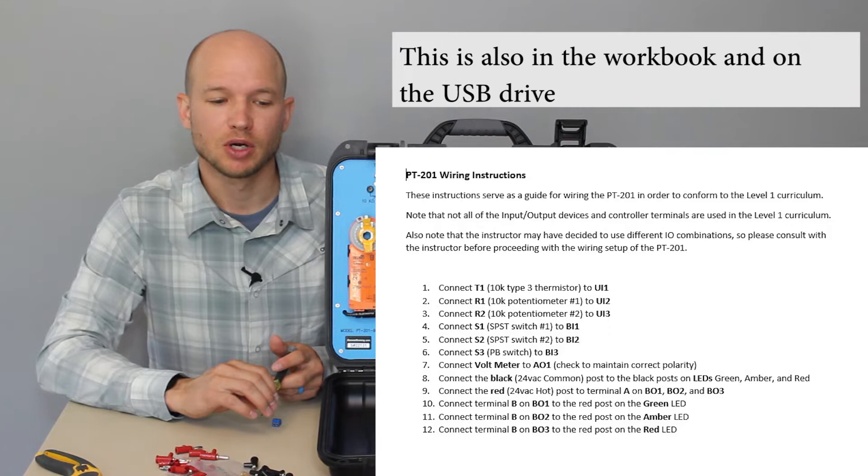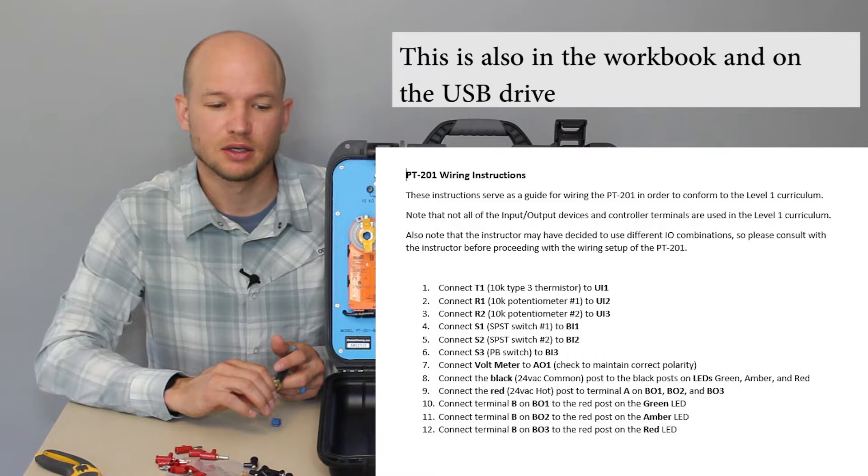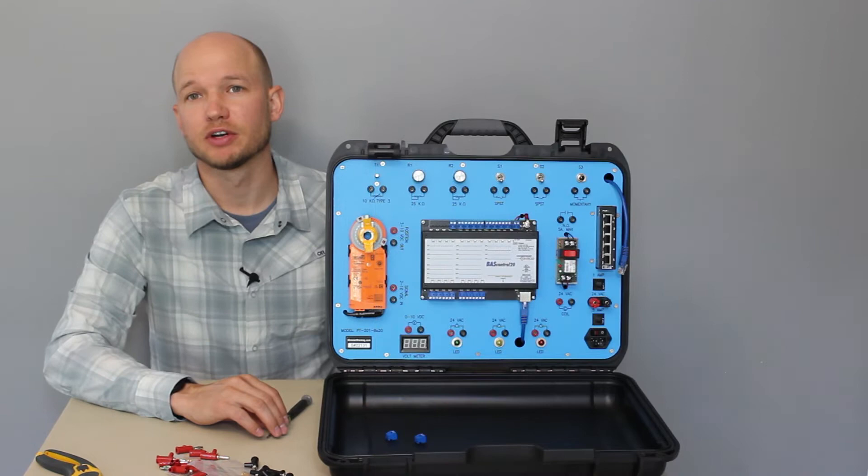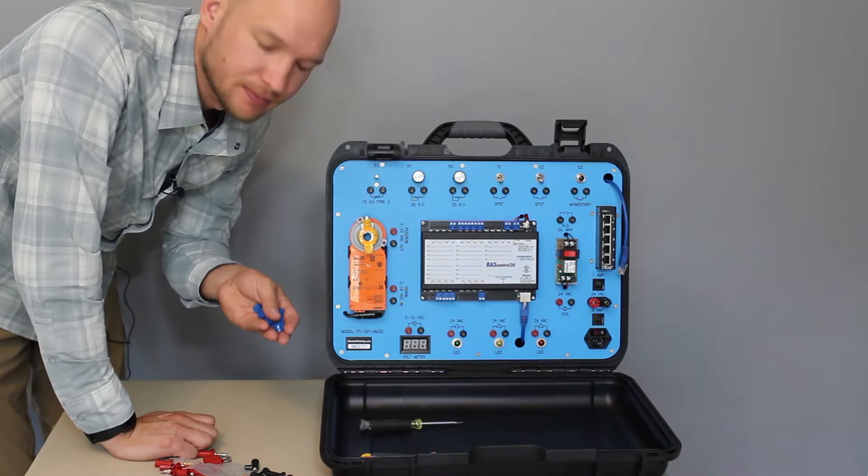So here you can see the point list. We're connecting T1 to universal input 1, R1 to universal input 2, R2 to universal input 3. You can see there's no universal input number 4 needed for curriculum 1. So we've pulled off all the connectors that we're going to use, and now let's get into the wiring.